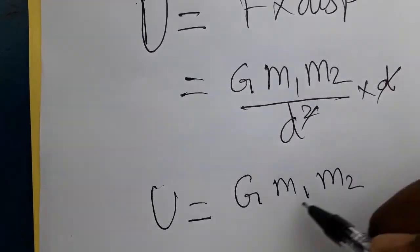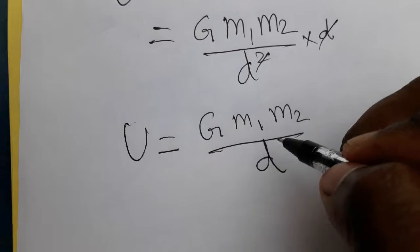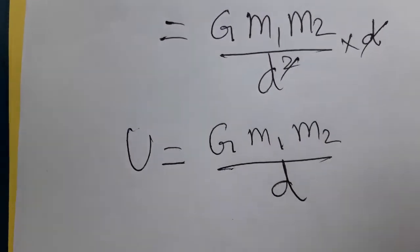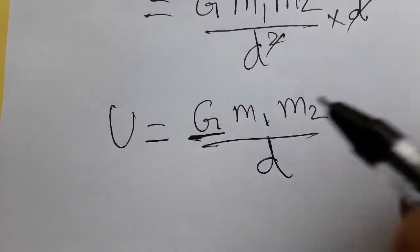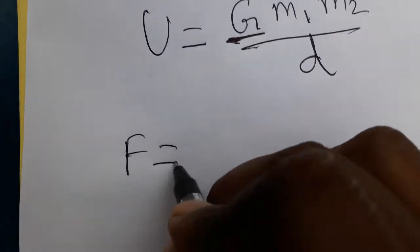So what is the SI unit of this? Before going to this, you should know what is G. F equals G times m₁m₂ divided by r squared.